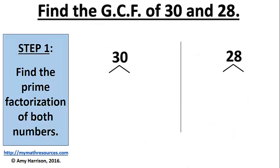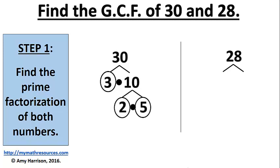Our first step is to find the prime factorization of both numbers. 3 times 10 is 30, 3 is prime. 2 times 5 is 10, and both of those are prime.